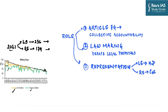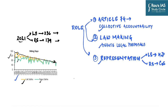If parliament is not meeting regularly, it compromises its three main functions: enforcing collective accountability on the executive, proper law-making, and providing representation to the people and states. The obvious question is: what are the indicators behind this declining trend? How do we know, apart from hours and days of meeting, that parliamentary productivity is declining?